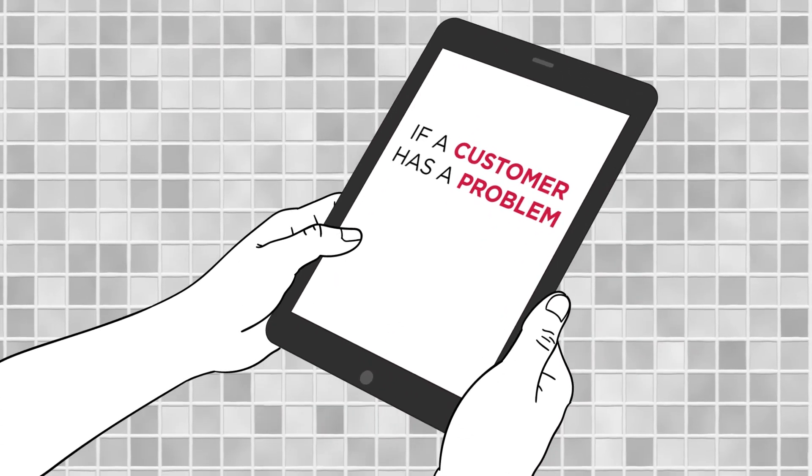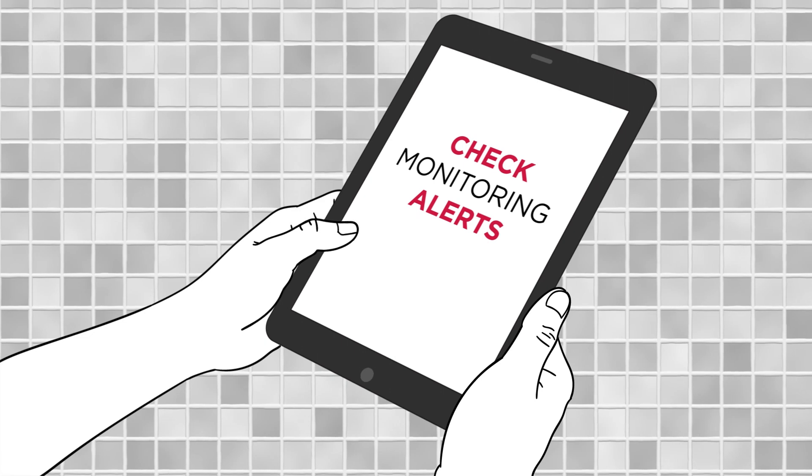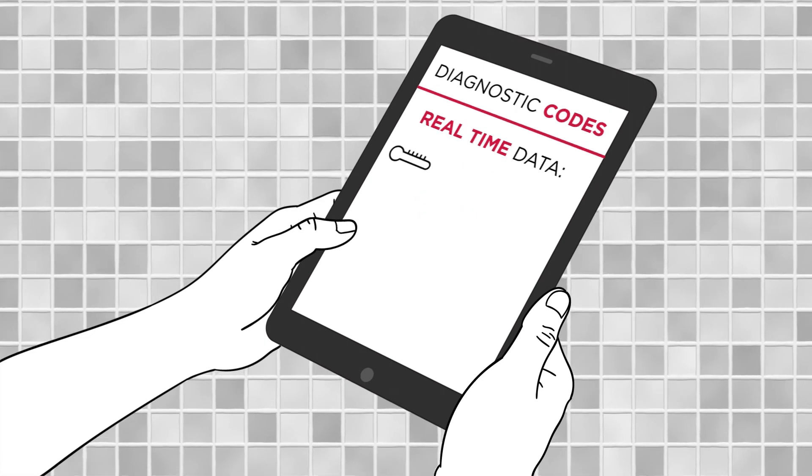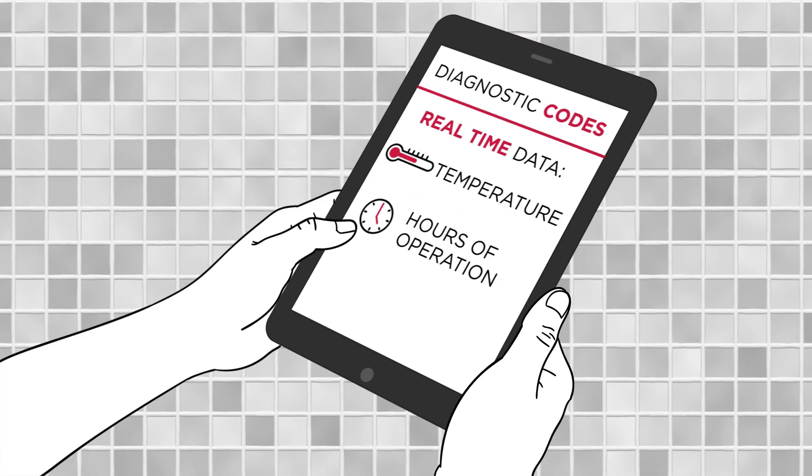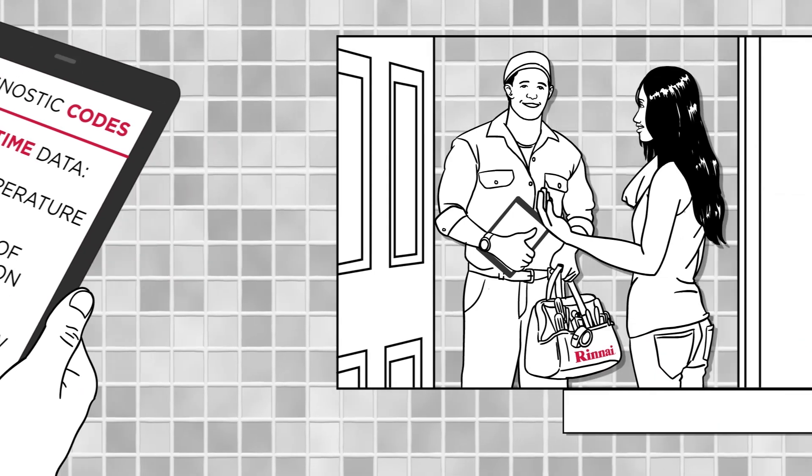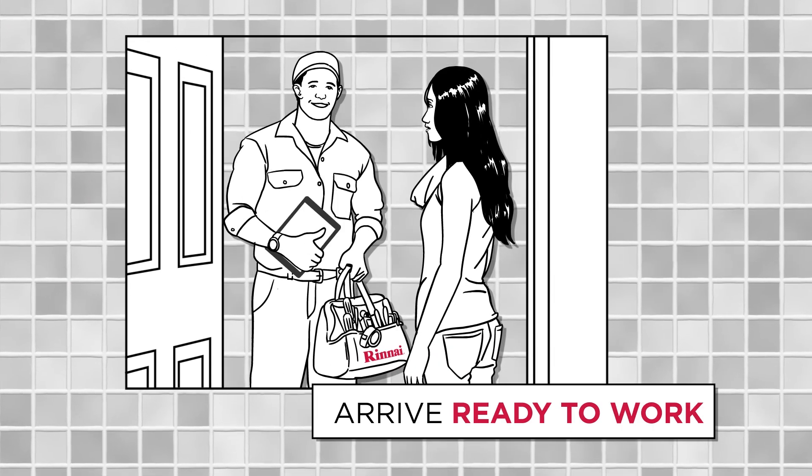If a customer has a problem, you can check monitoring alerts for diagnostic codes and get real-time data on temperature, hours of operation, and water flow, so you can arrive at their home or business ready to work.